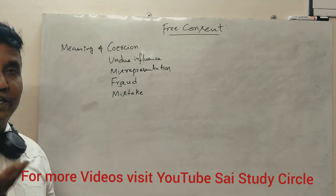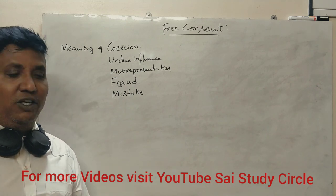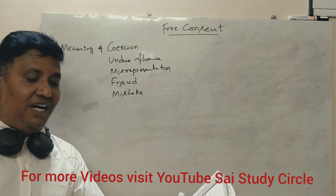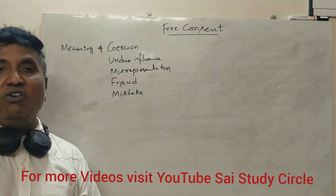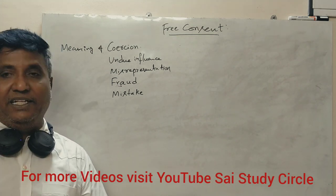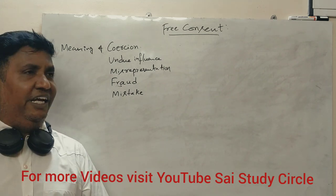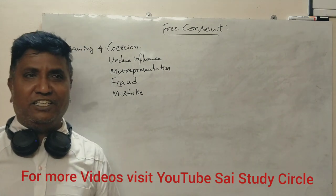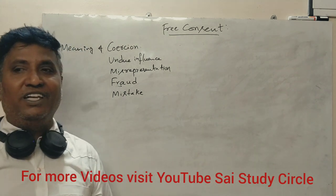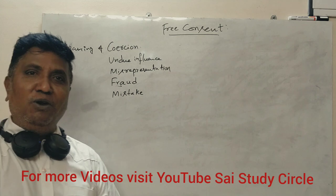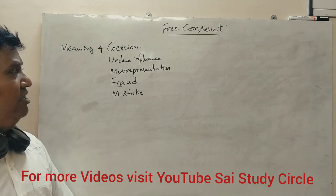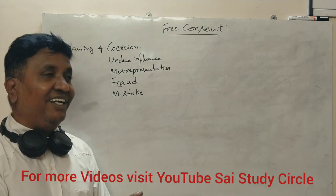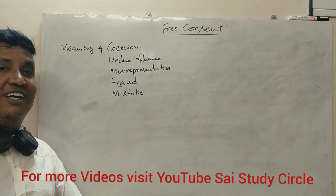What is coercion? Coercion is the threat or force used by one party against the other party, making them enter into the contract. For example, threatening someone, forcing them, kidnapping their daughter or wife, causing physical threats or mental torture — all of these are forms of coercion. Physical threatening also amounts to coercion.